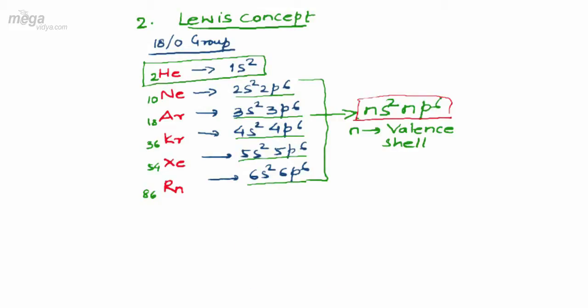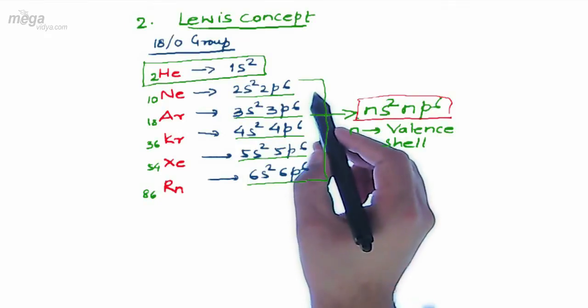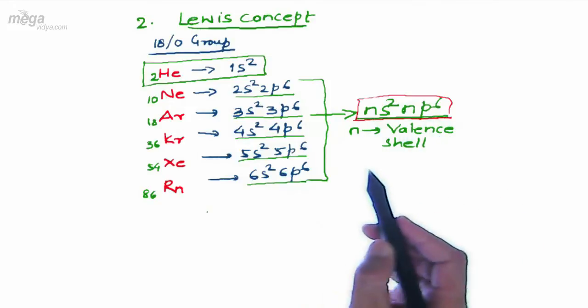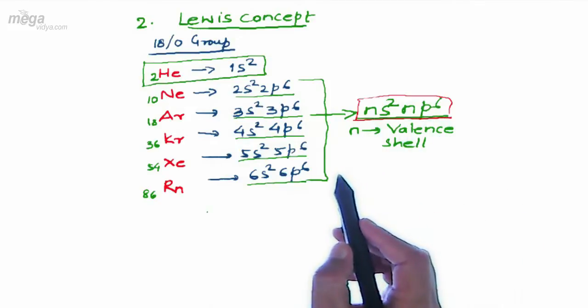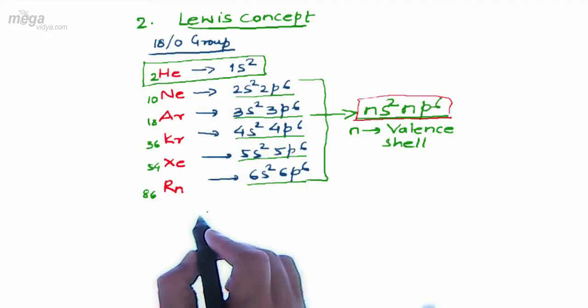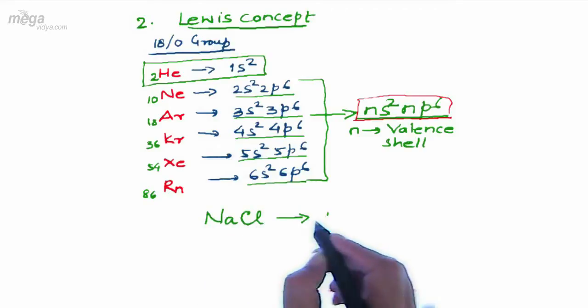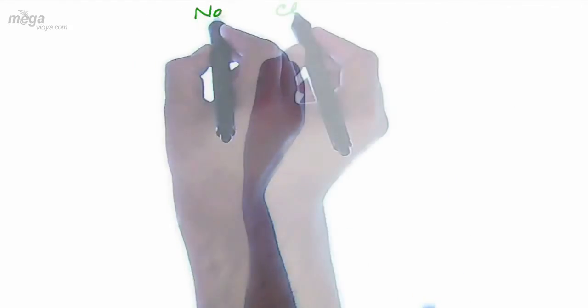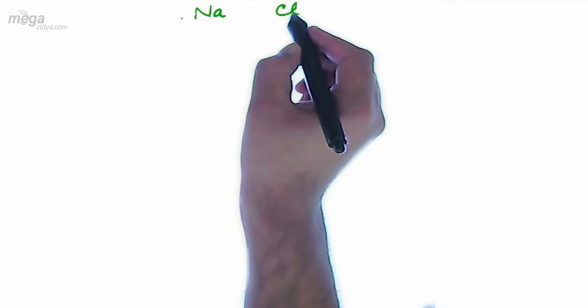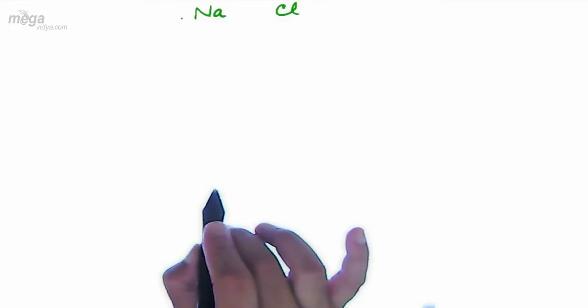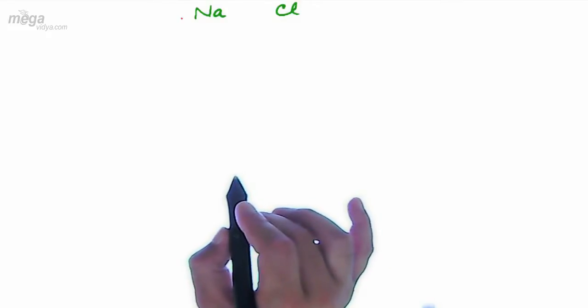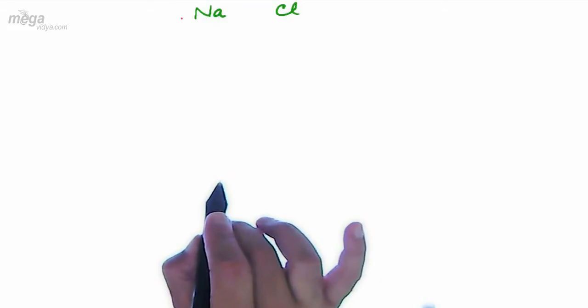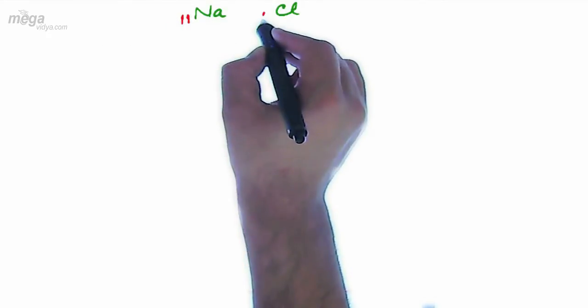Now moving ahead, we can say that if an atom or element attains noble gas configuration, that is ns2 np6 configuration, then those elements will get stabilized. Let us consider an example of NaCl molecule in which sodium and chlorine have been bonded to each other. Sodium has an atomic number of 11, chlorine has an atomic number of 17.